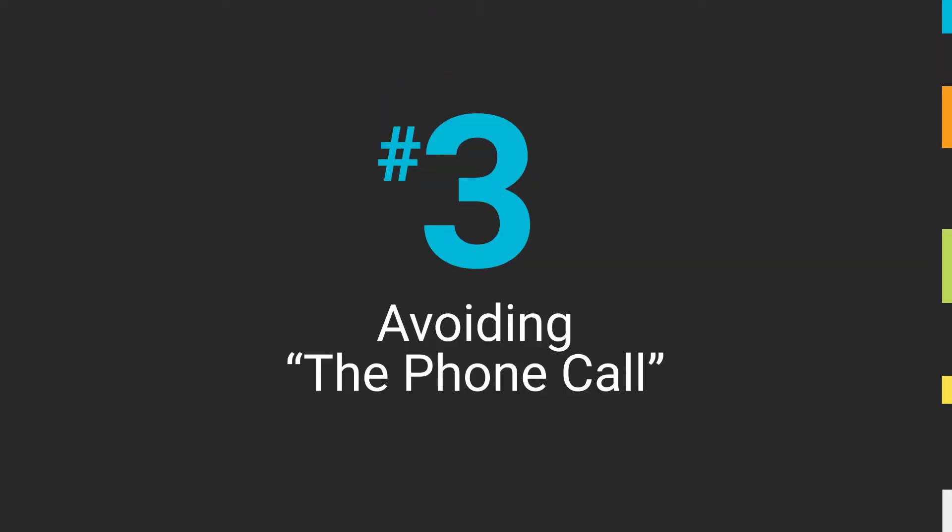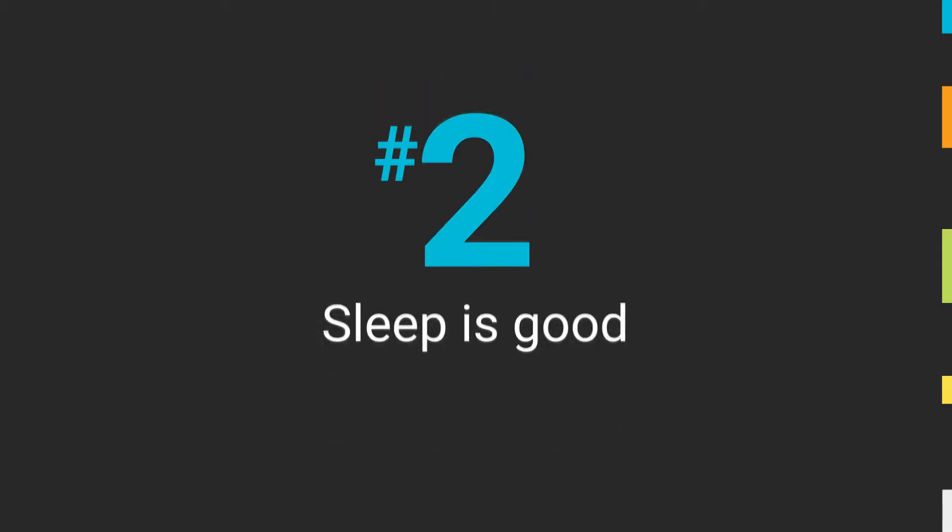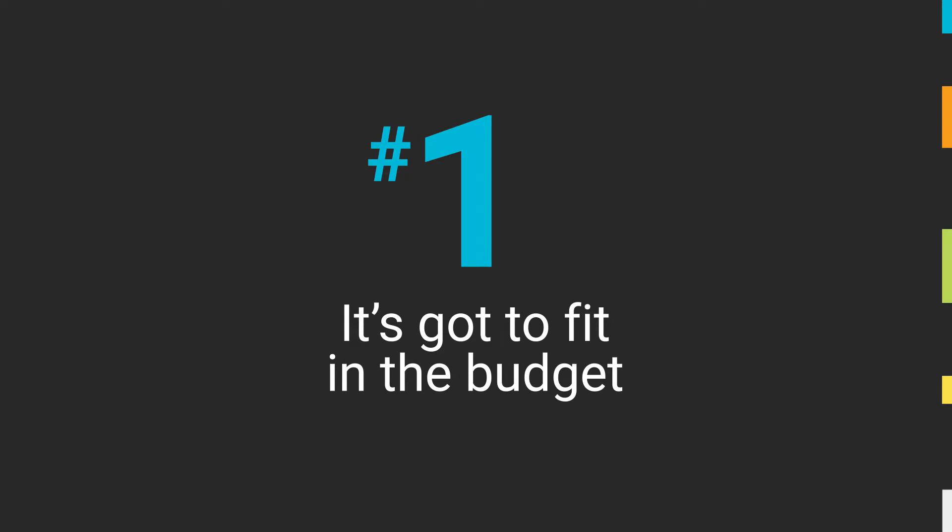Number three: it's good to know when things break before you get the phone call — and the phone call is going to be the VP or the owner asking what is going on. Number two: you'd like to sleep a little more. If your phone is vibrating at one in the morning, there is no sleep. And number one: it's got to fit in the budget — and that includes not only the tool, but all the time spent configuring. You need to factor in your time. That's your most valuable asset.